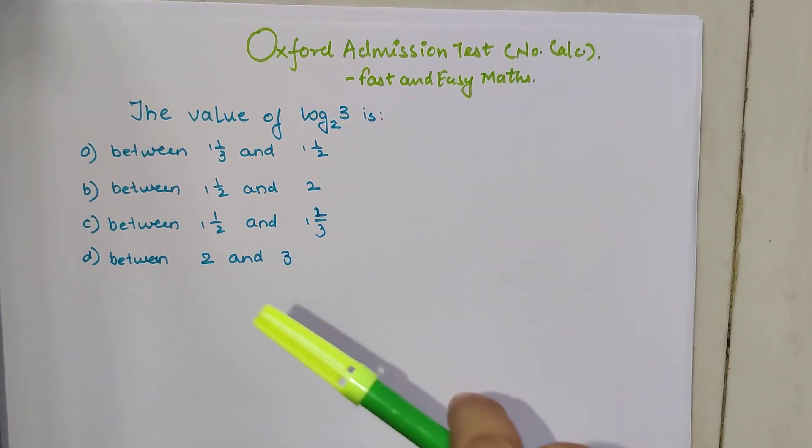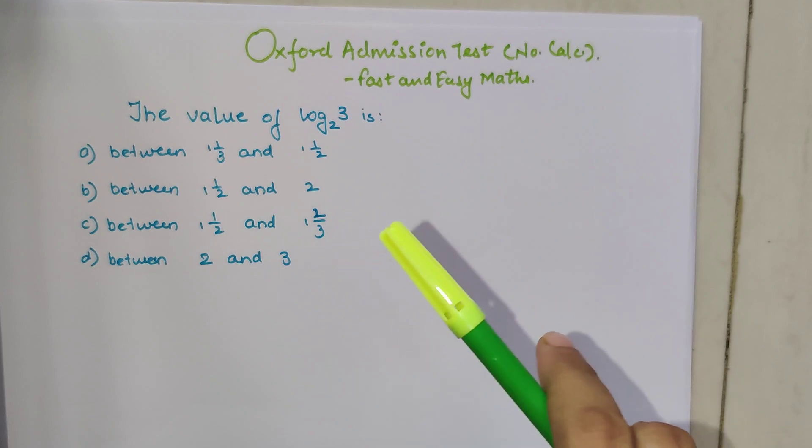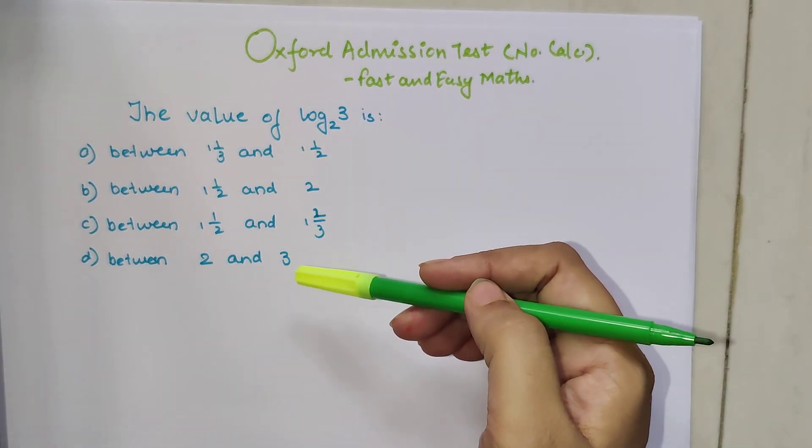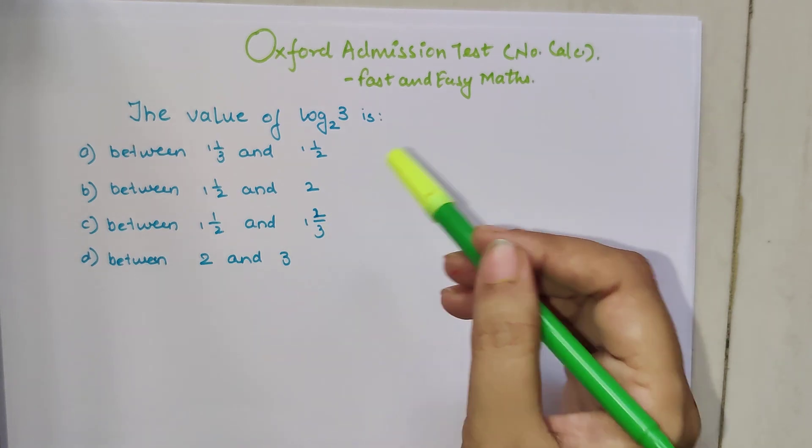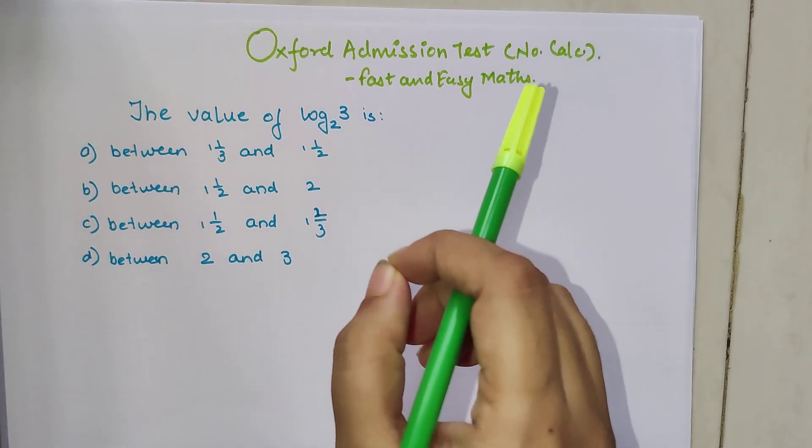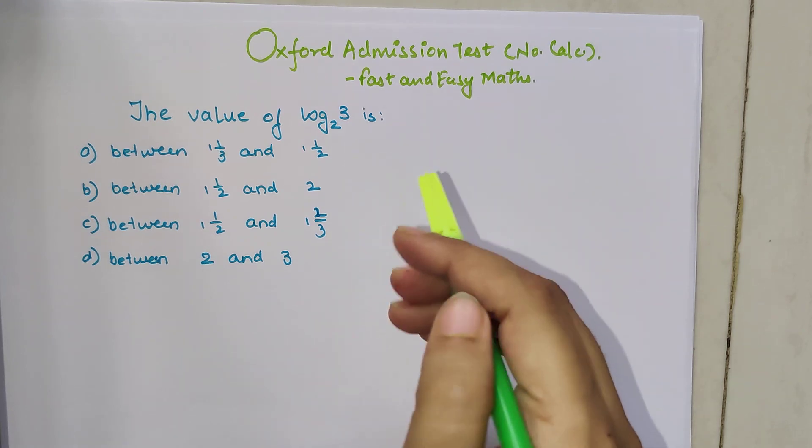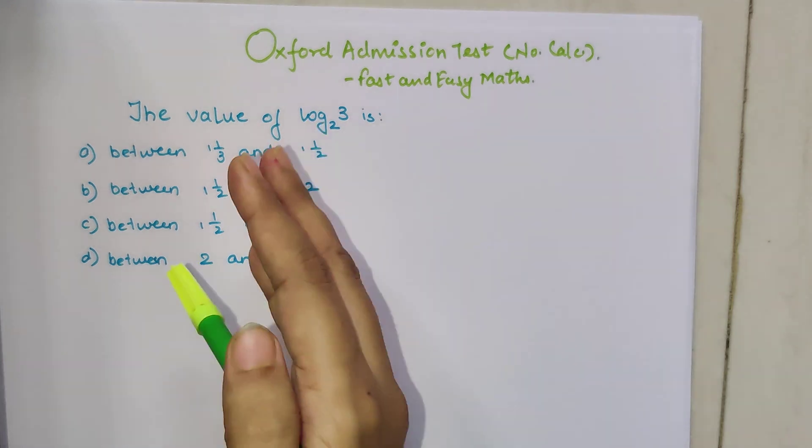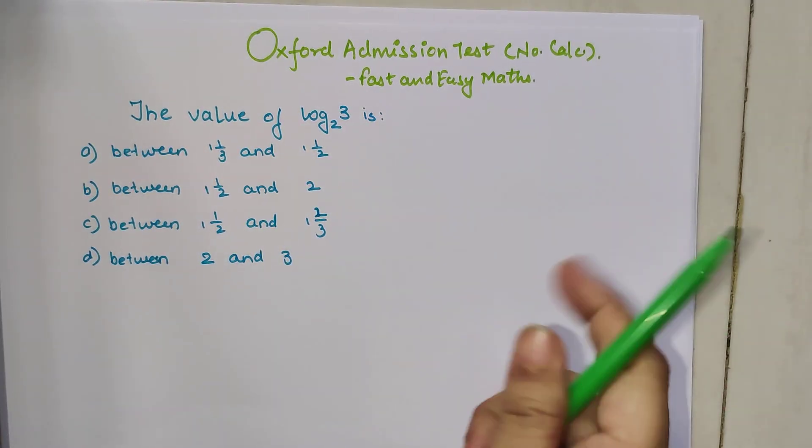They had asked to find the value of log 3 to the base 2. And the options were given in range. So you did not need to find the particular full value of log 3 to the base 2. All you needed to know was where does this value lie, in which range. So let's begin.